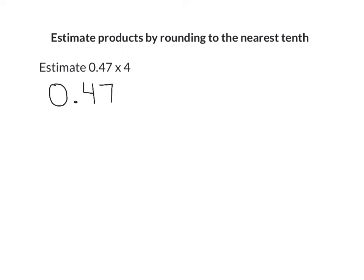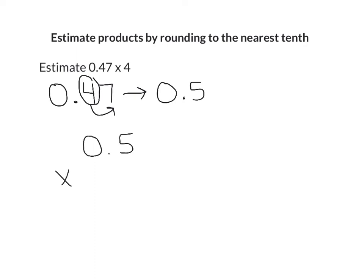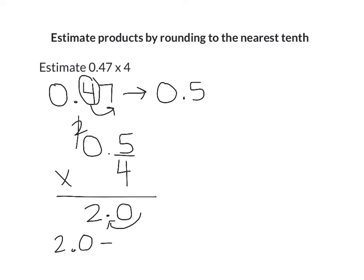Next we'll estimate products by rounding to the nearest tenth. We have 47 hundredths times 4. We circle the rounding digit in the tenths place and look next door — 7 or higher means we add one more to the tenths place, so 47 hundredths rounds to 5 tenths. Now we multiply: 5 tenths times 4. 4 times 5 is 20, regroup the 2; 4 times 0 is 0, plus 2 is 2. We count one decimal place from the right, giving us 2.0, which we write as 2.